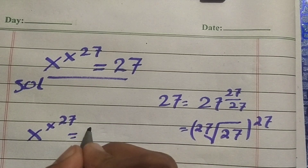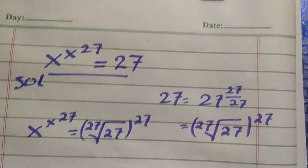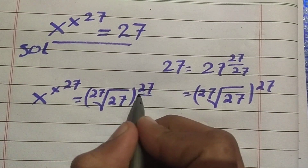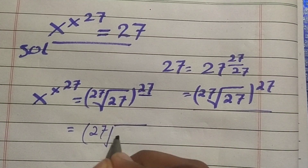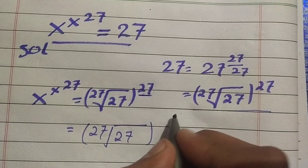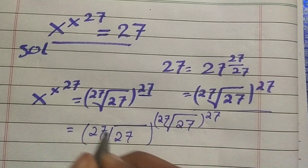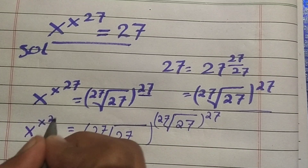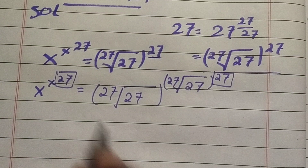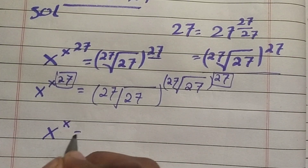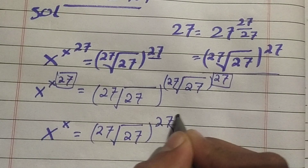Again, we have 27 here, and we can write this in the same form. So (27th root of 27)^((27th root of 27)^27) is equal to x^(x^27). Here we have 27 in both places, so x^x = (27th root of 27)^(27th root of 27).